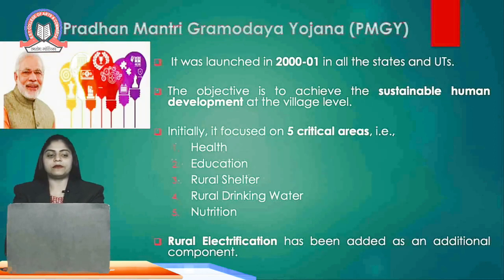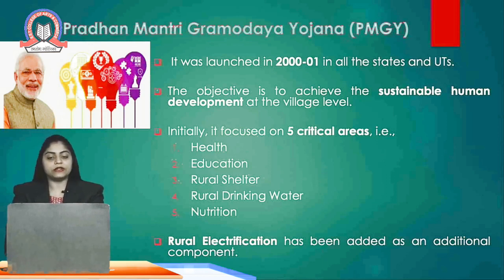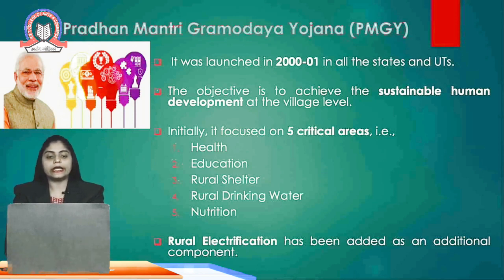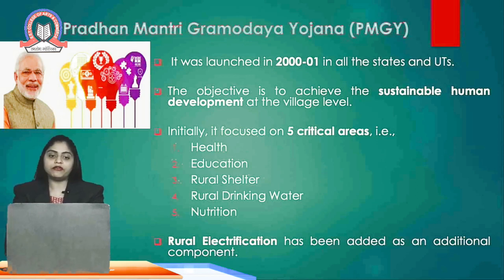The next scheme is Pradhan Mantri Gramodaya Yojana. The objective is to achieve sustainable human development at the village level. This scheme came into effect from 2000-2001 in states and union territories. Initially, it focused on five critical areas: health, education, rural sector, rural drinking water, and nutrition.